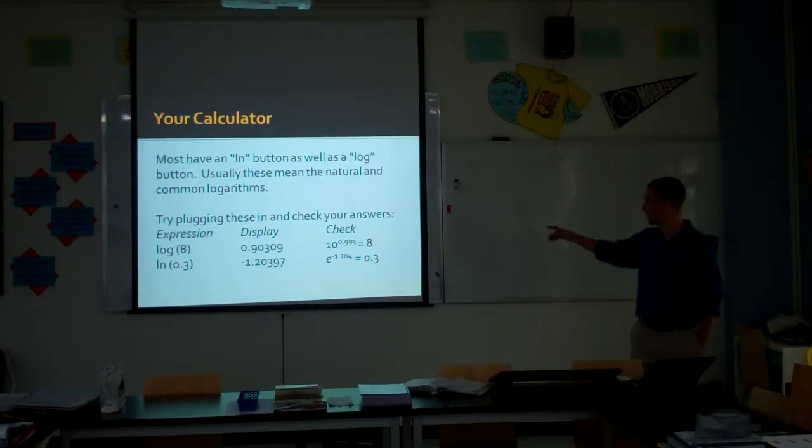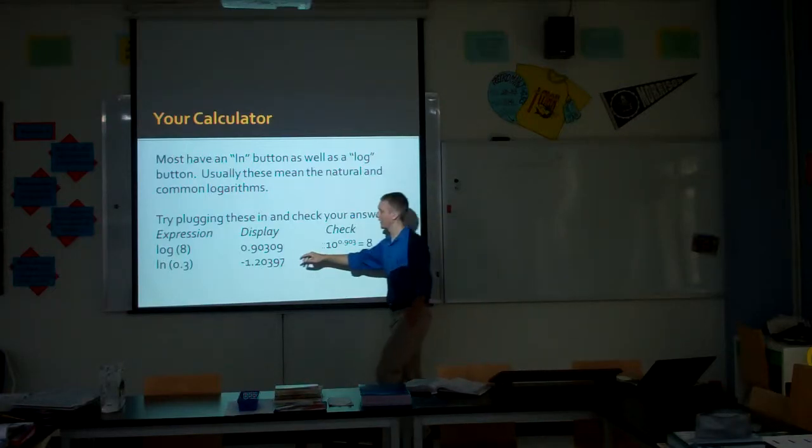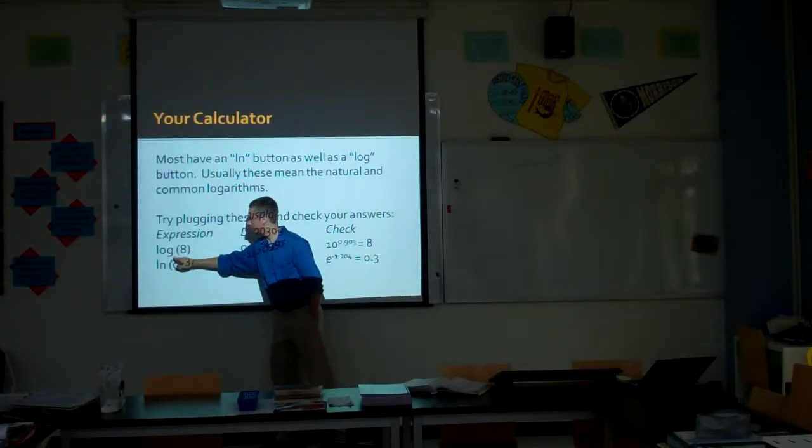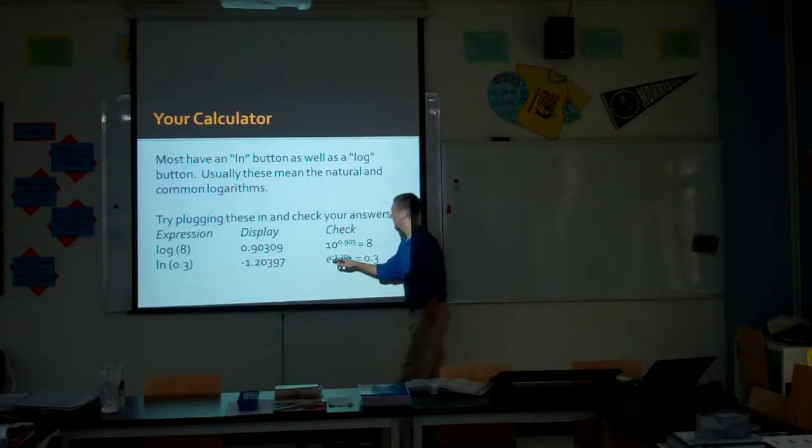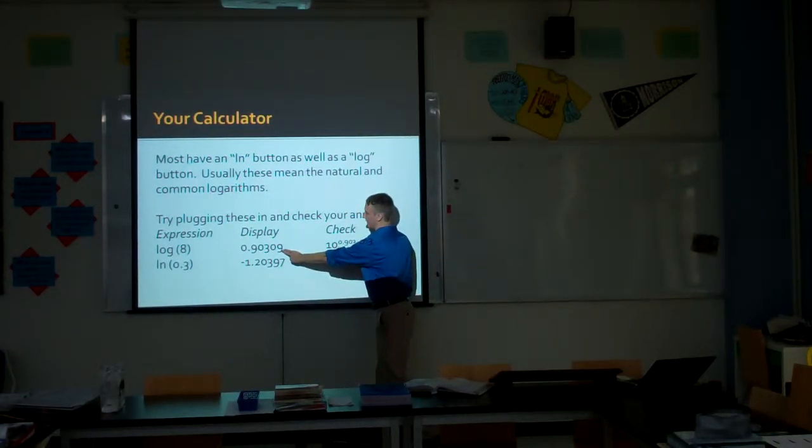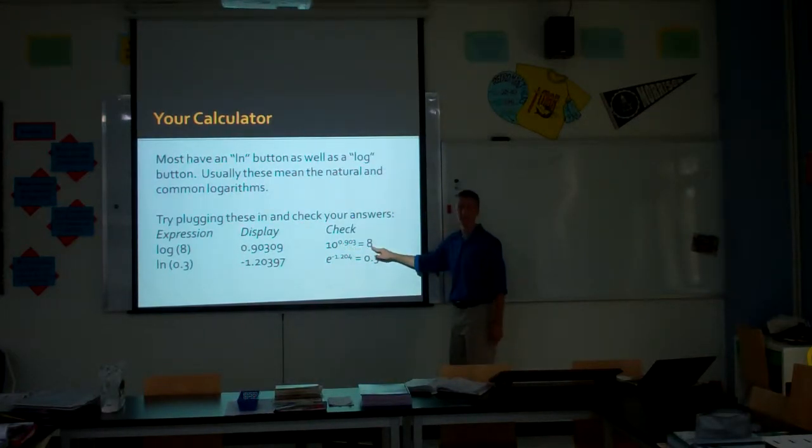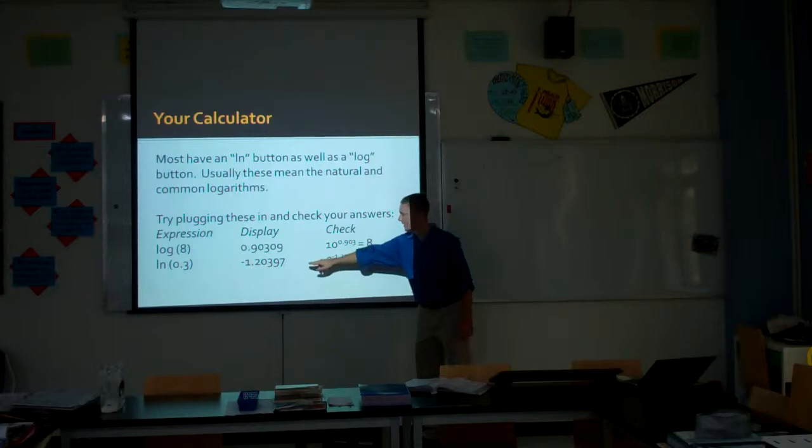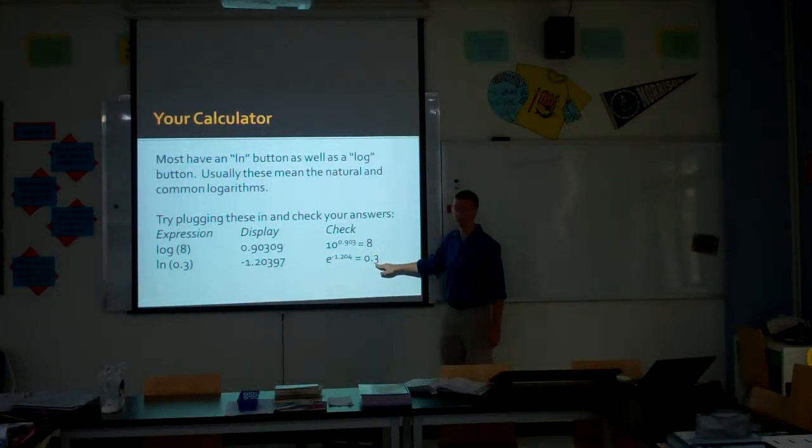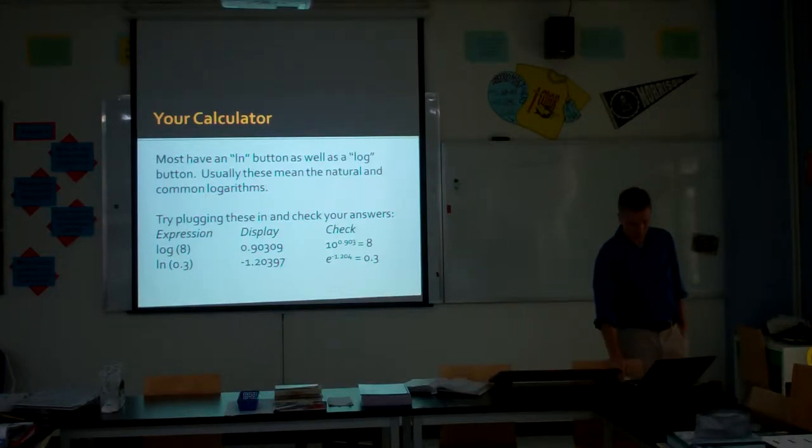Did you get the right answers? Yeah. You can always check your work when you finish with these problems. Whatever the base was on the logarithm, 10, E, you can take the base to what you got for your answer. So 10 to the 0.93 power should give you 8. E to the negative 1.204, 0.3. You can always check your answers on this. And it's very easy.